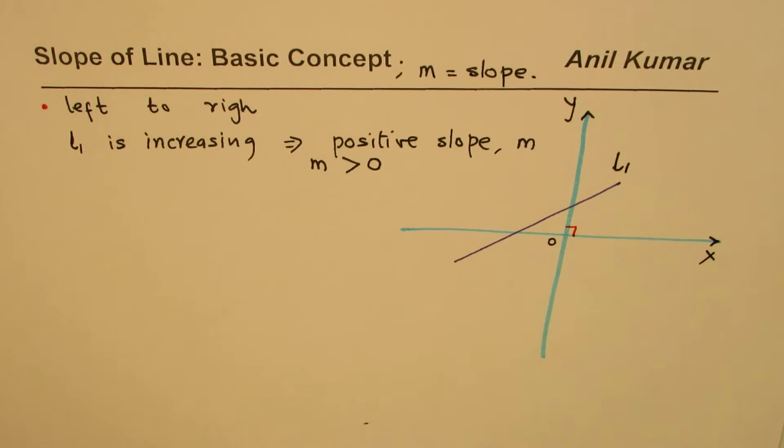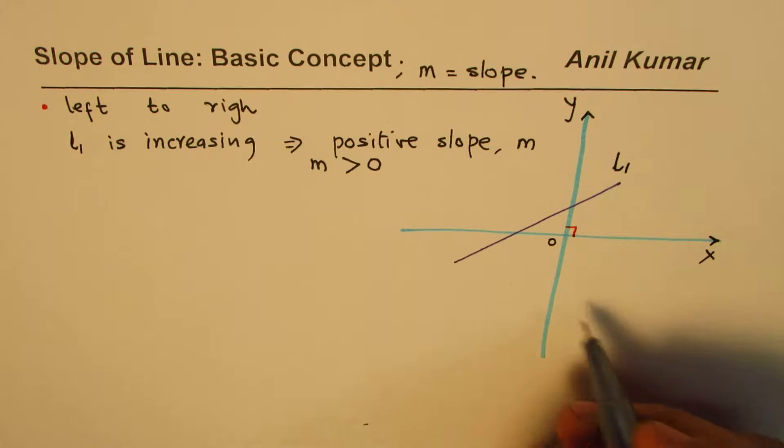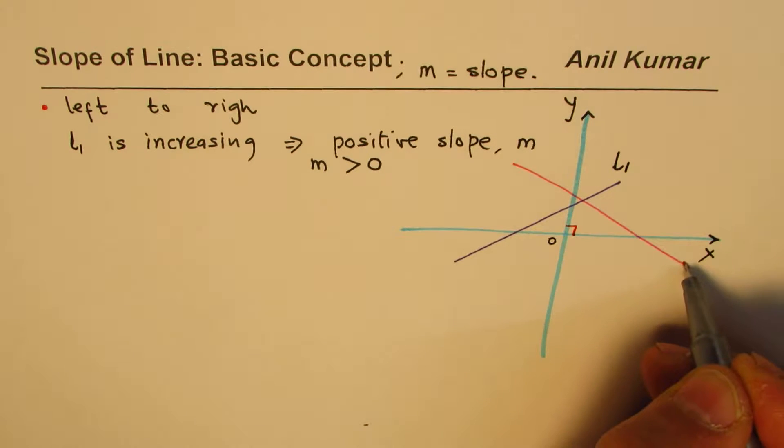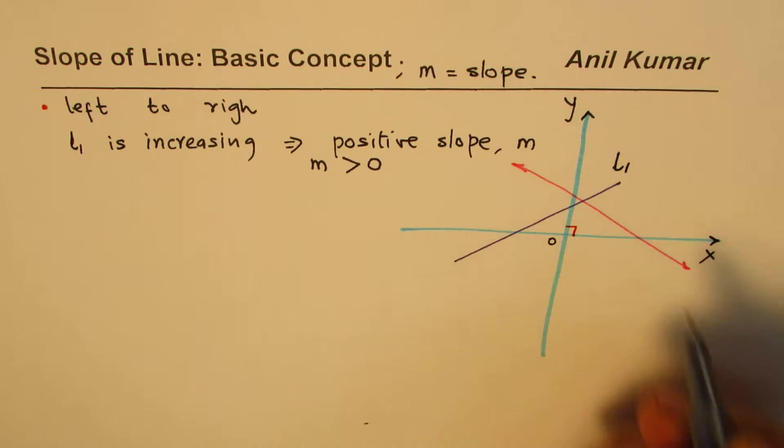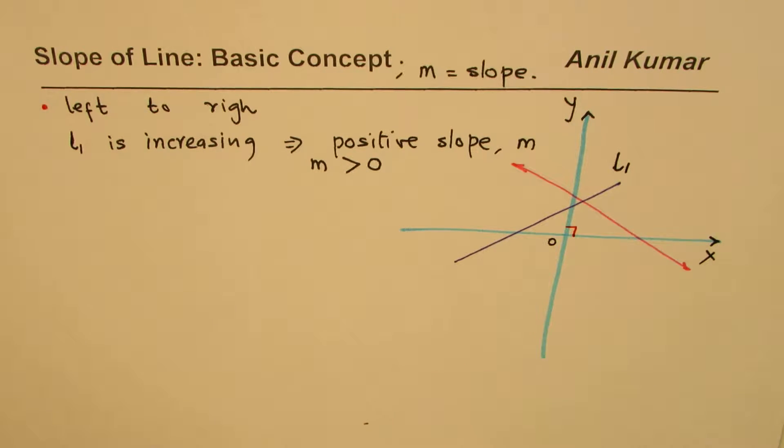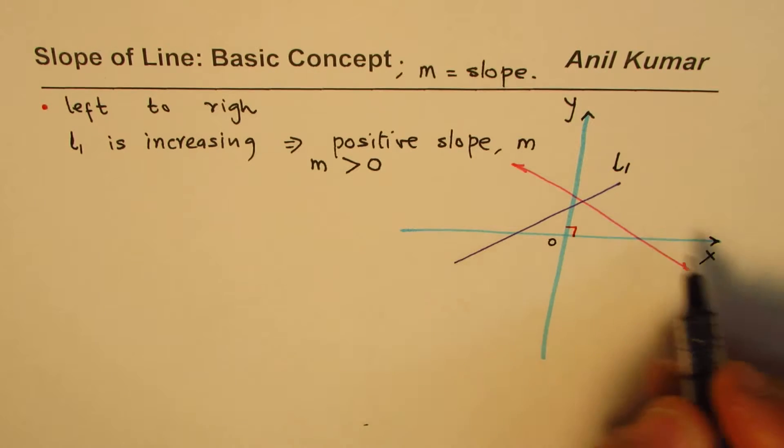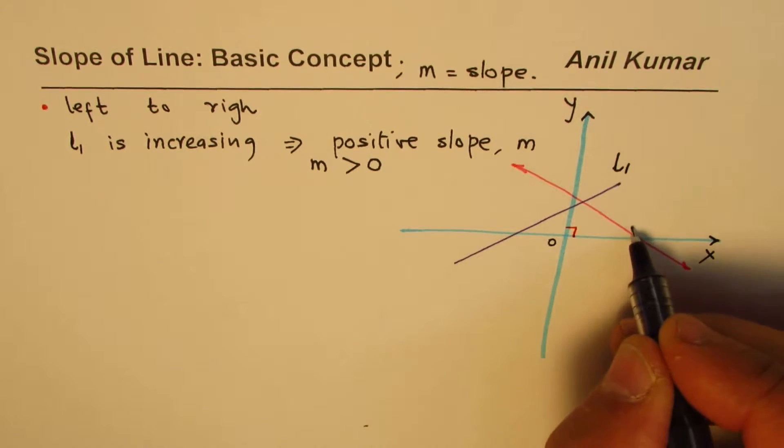Now let's take another line. This time I am taking a line which is dropping downwards, kind of like this, going down the hill. Lines, normally you put arrows on both the sides. If arrows are not there, we assume them to be there. Let's call this line as line 2.